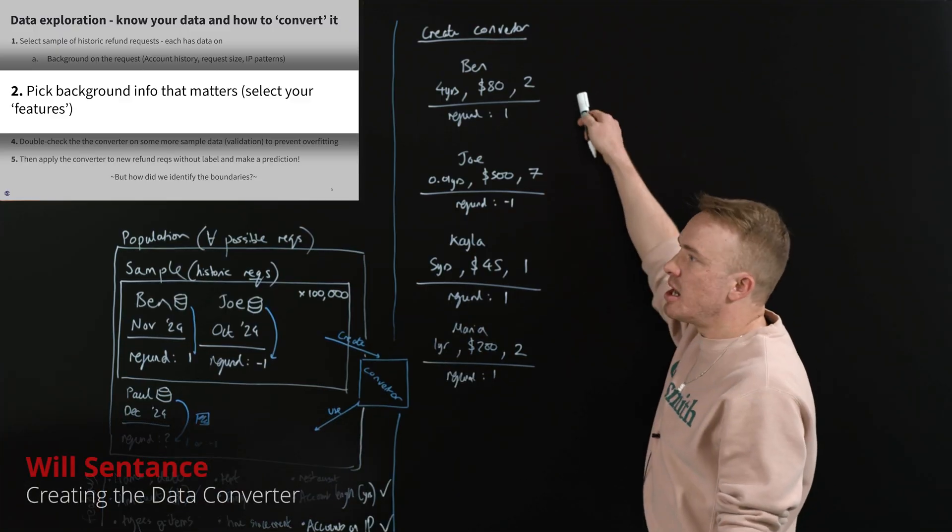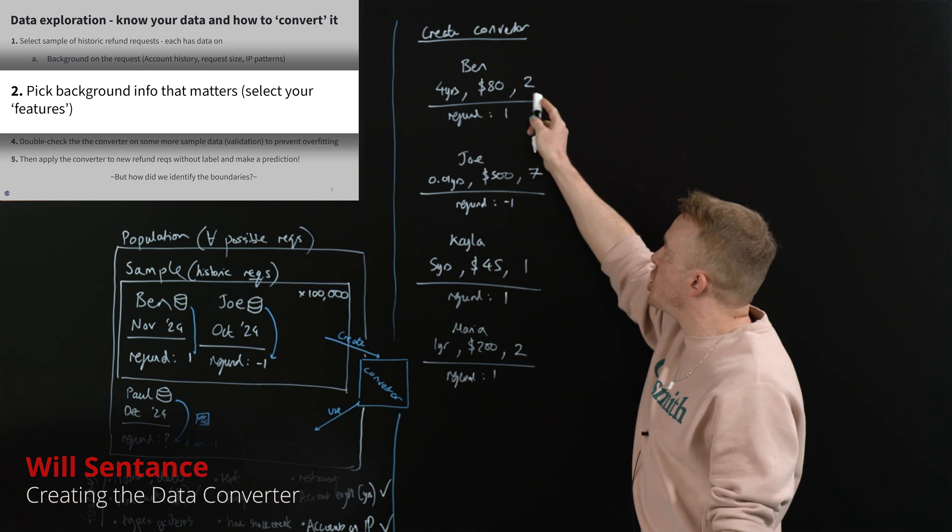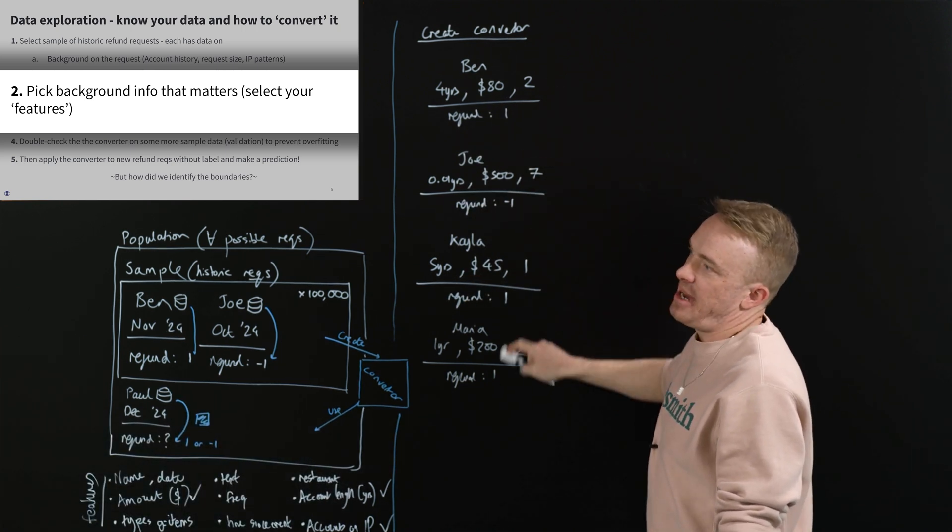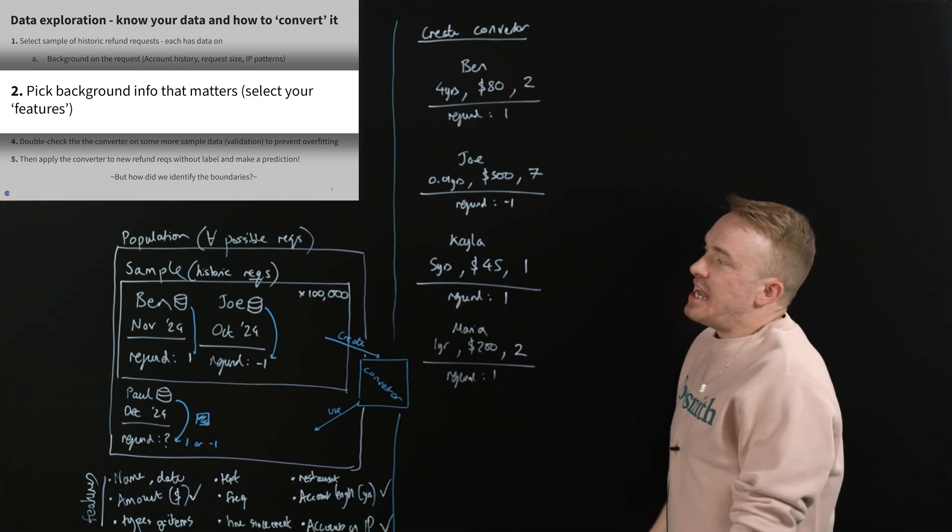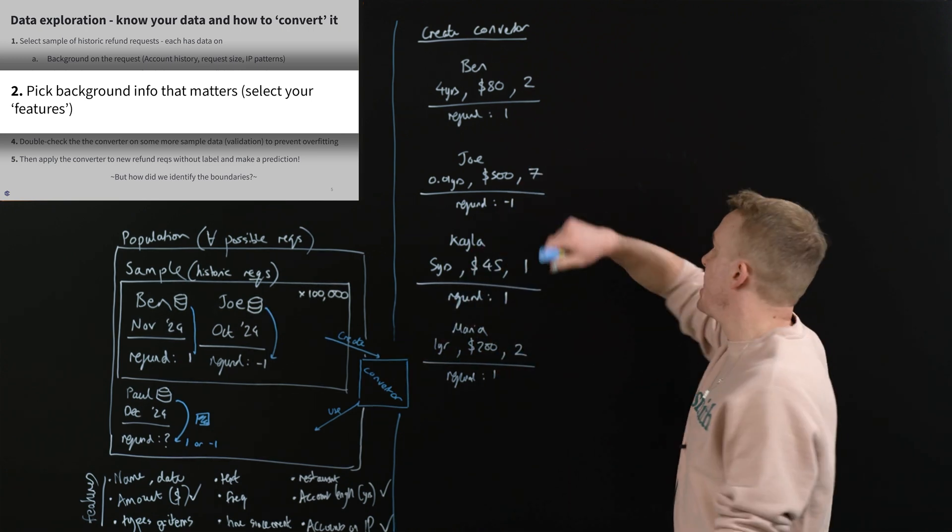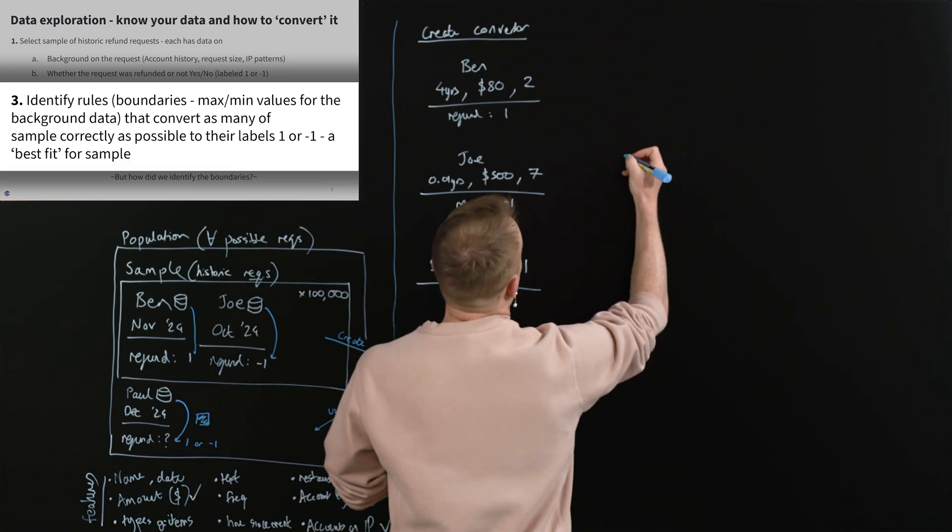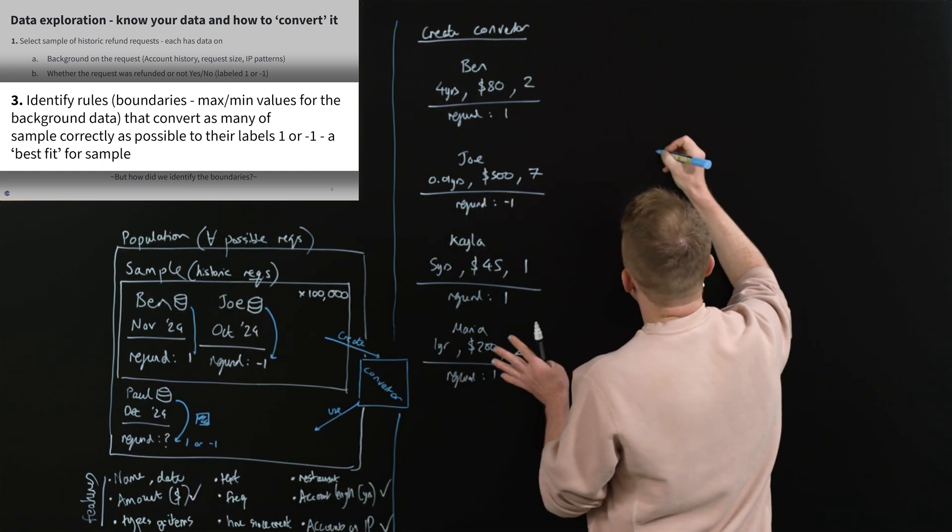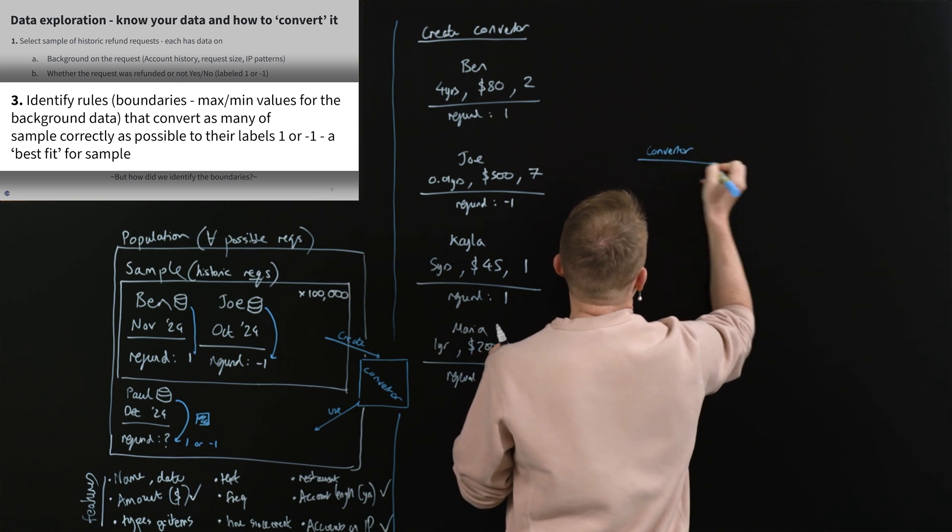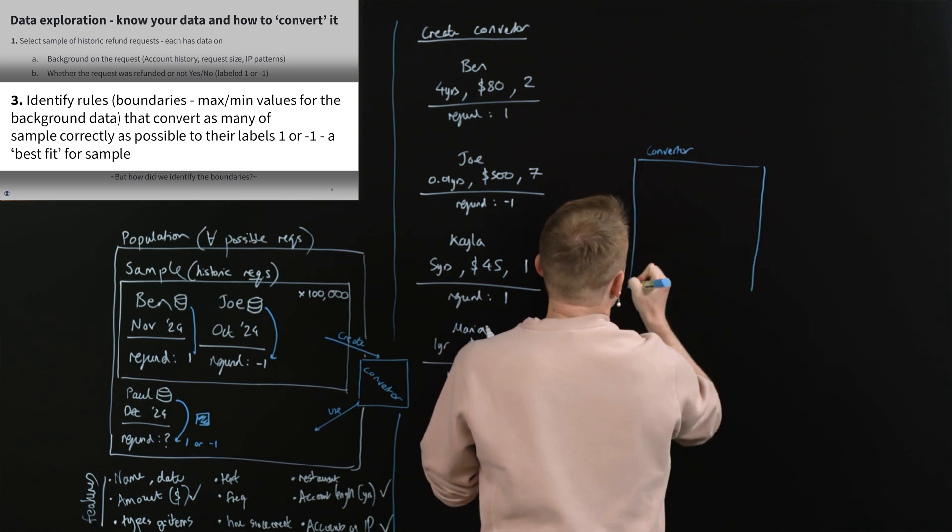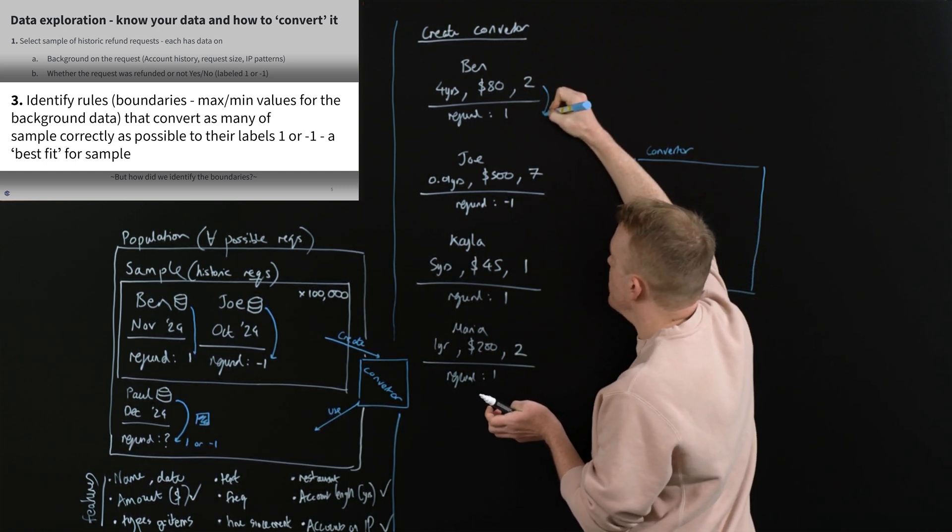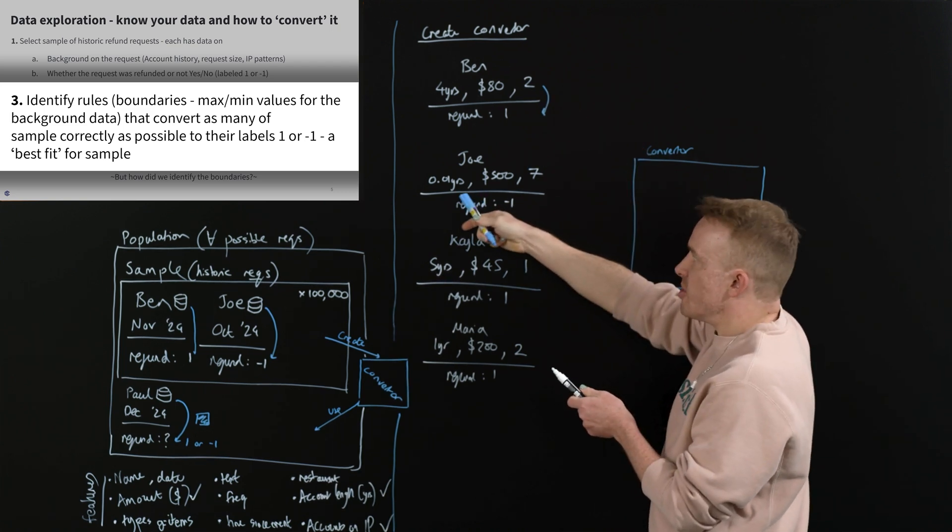And so there we go, we have our sample with the background features, things that we think matter—features being the fancy word, background info that we think matters. Select your features. Now, people, we have to, and blue is going to be my creation process. We have to somehow develop some set of rules, I'm going to call it a converter, some set of rules that successfully convert, really 482 into the number one. Different numbers, 0.01, right?